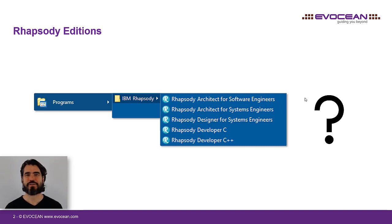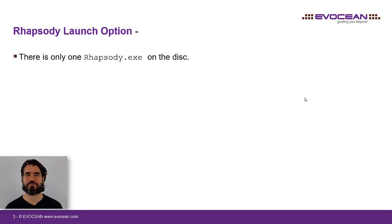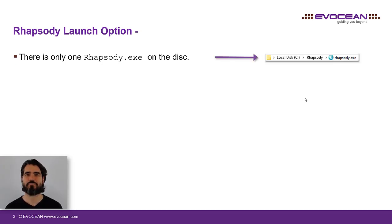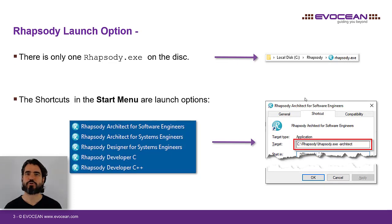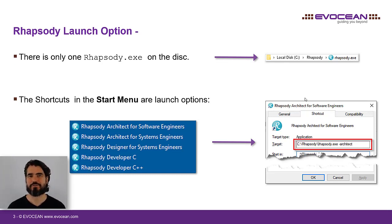The good news up front: you don't have different Rhapsody installations. There is only one Rhapsody.exe on your hard disk, so you don't have to worry about wasting disk space. All the things that you see are simply shortcuts or launch options with which you can start the corresponding Rhapsody edition, and each launched edition will expose more or less functionality and features to you.